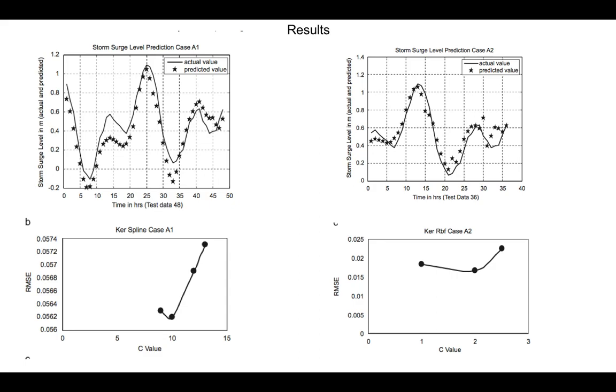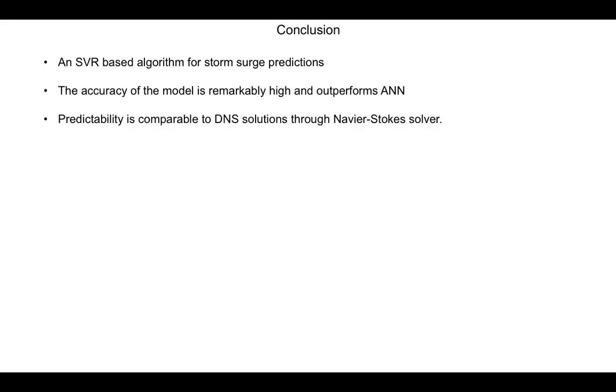So this essentially shows us that the predicted results are actually quite close to the actual results. In conclusion, this paper implements a new support vector based regression algorithm to predict water rise which is essentially a storm surge problem. It shows us the accuracy of the model is remarkably high and is often better than previous literatures that have reported neural network based predictions.